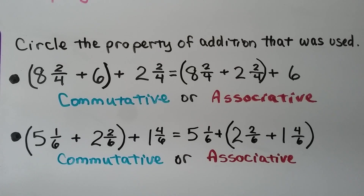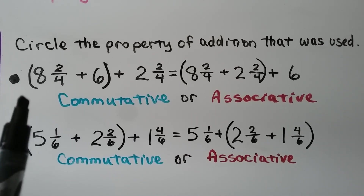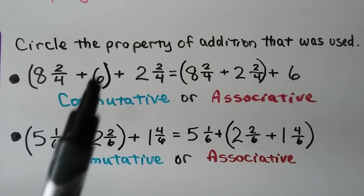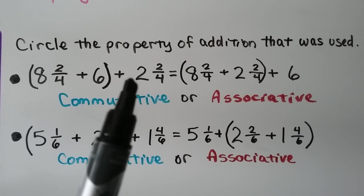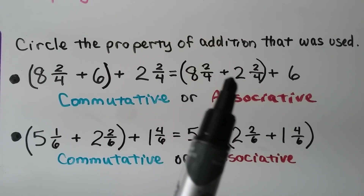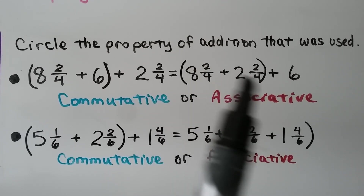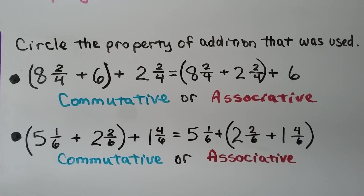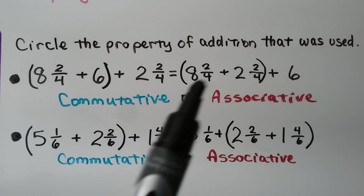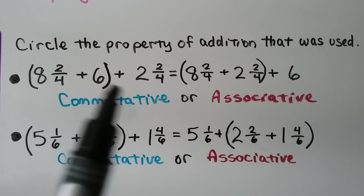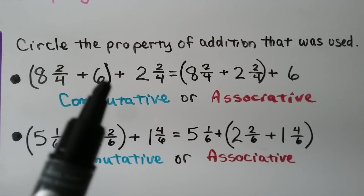We need to identify the property of addition that was used. We have 8 and 2 fourths plus 6 in parentheses, plus 2 and 2 fourths. Then the 8 and 2 fourths plus 2 and 2 fourths is shown in parentheses, with the 6 on the outside. Did we use the commutative property to change their order, or the associative property to move the parentheses? We used the commutative property — we changed the order of the 2 and 2 fourths and the 6, while the parentheses stayed around the first two addends.